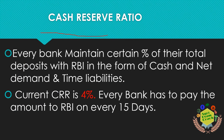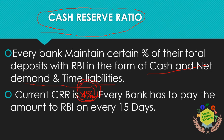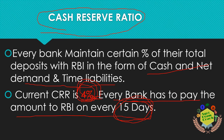Cash Reserve Ratio (CRR): every bank must maintain a certain percent of total deposits with RBI in the form of cash. The current CRR is 4%. For example, if SBI has 100 crores, it must keep 4 crores with the RBI. Every bank must submit this amount to the RBI every 15 days.